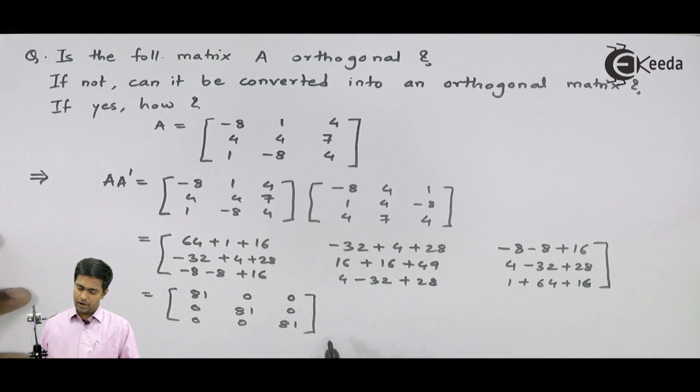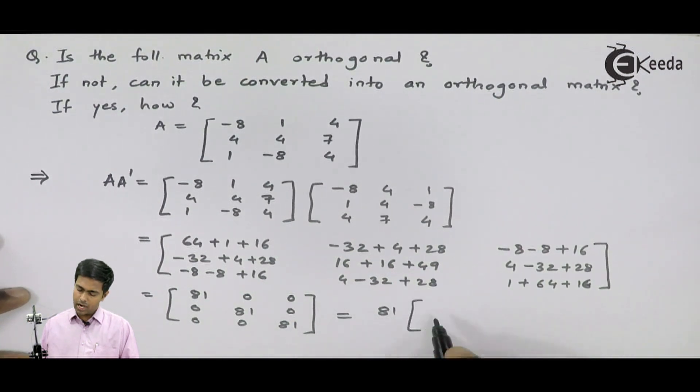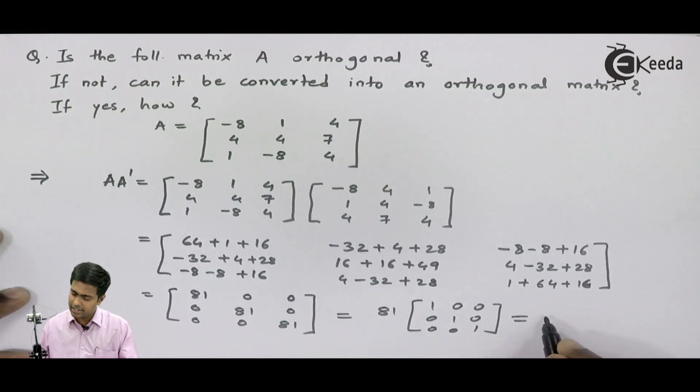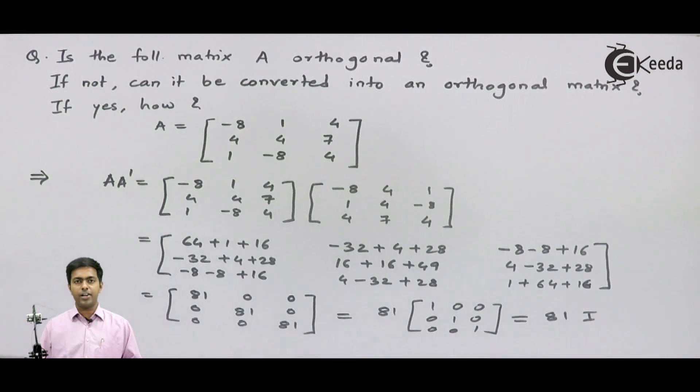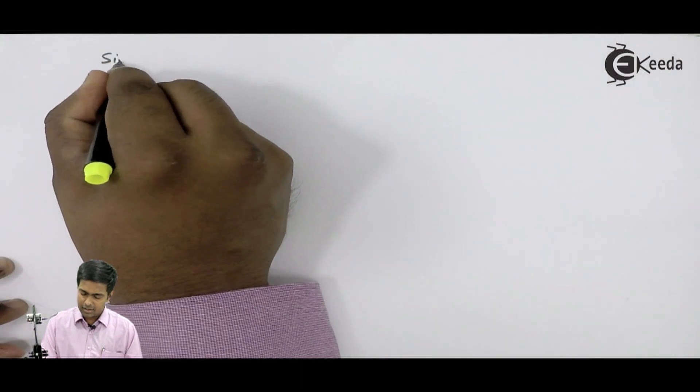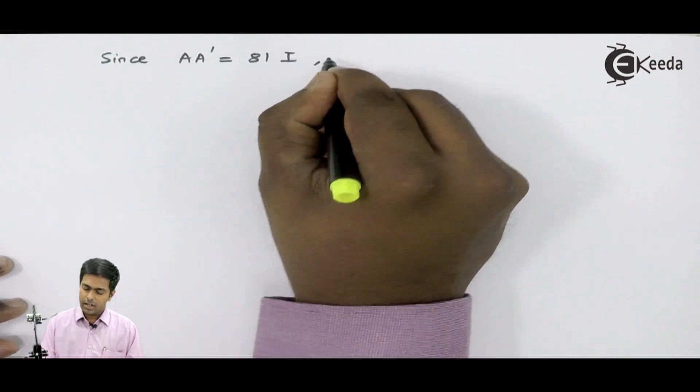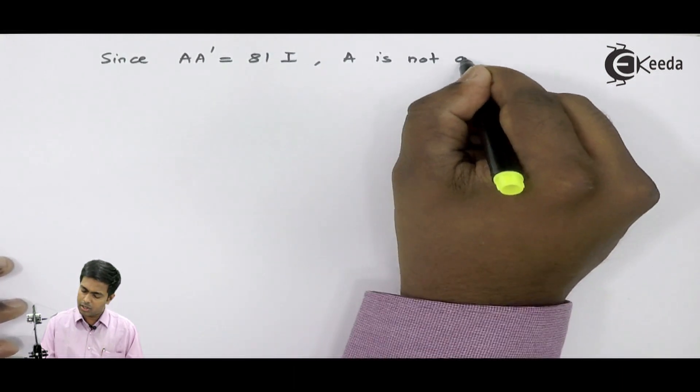It means if I take 81 outside, I will get 1, 0, 0, 0, 1, 0, 0, 0, 1. I am getting the identity matrix over here, which means I am getting 81I. Now we are getting A into A dash equals 81I. This clearly indicates that A is not an orthogonal matrix. Since A into A dash equals 81I, A is not an orthogonal matrix.